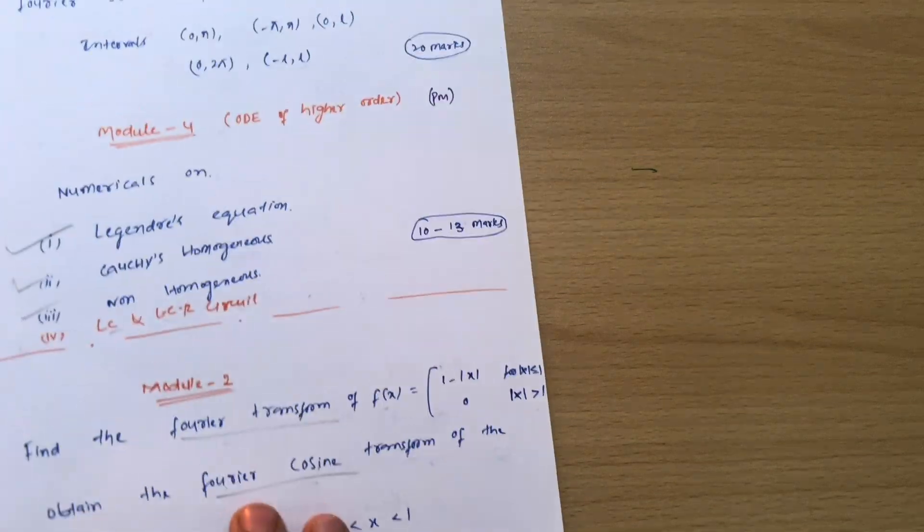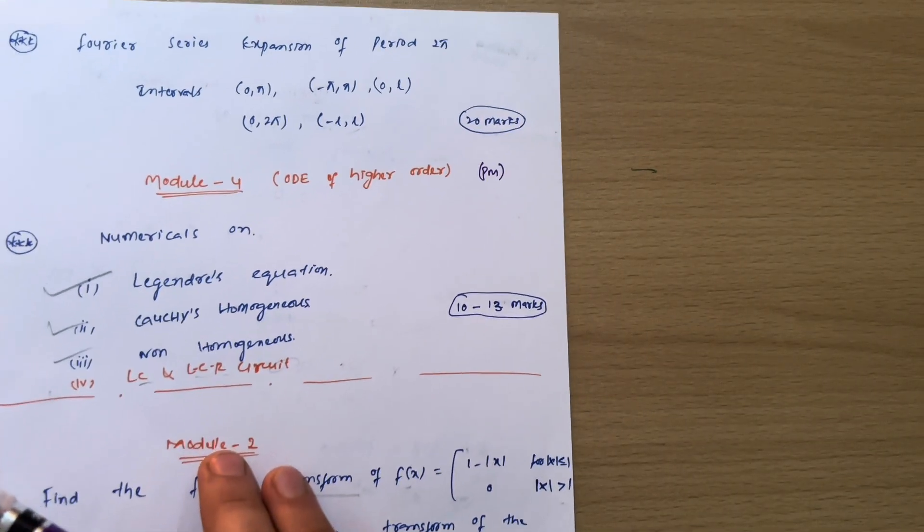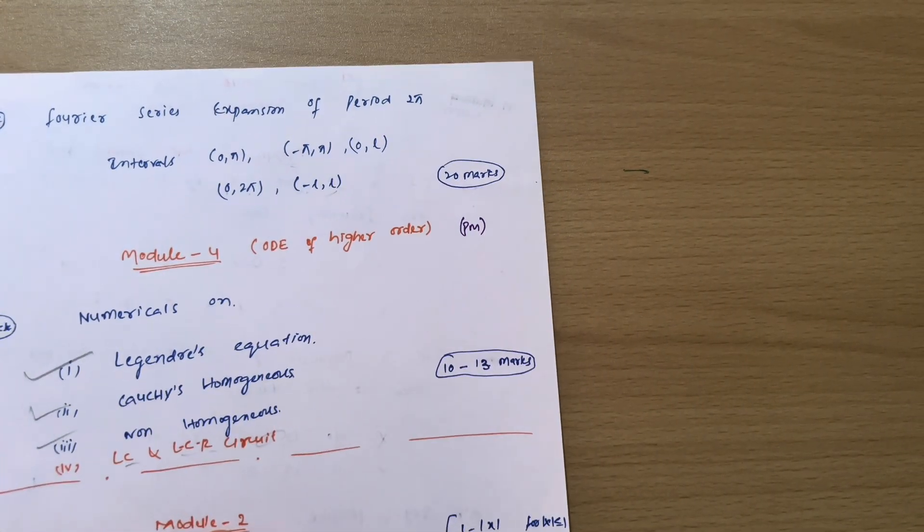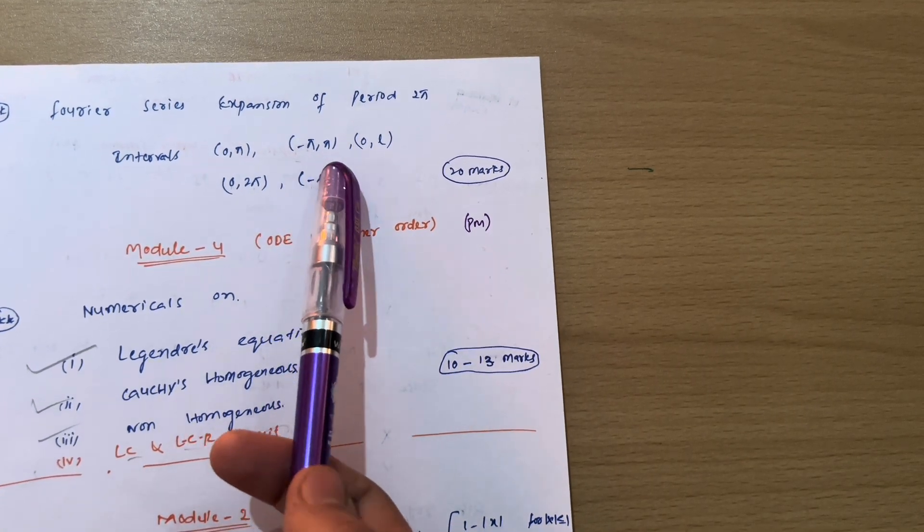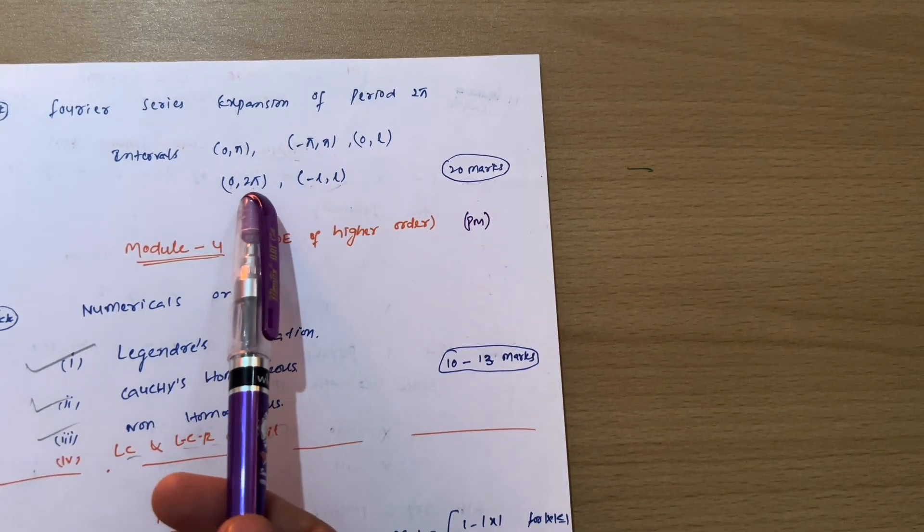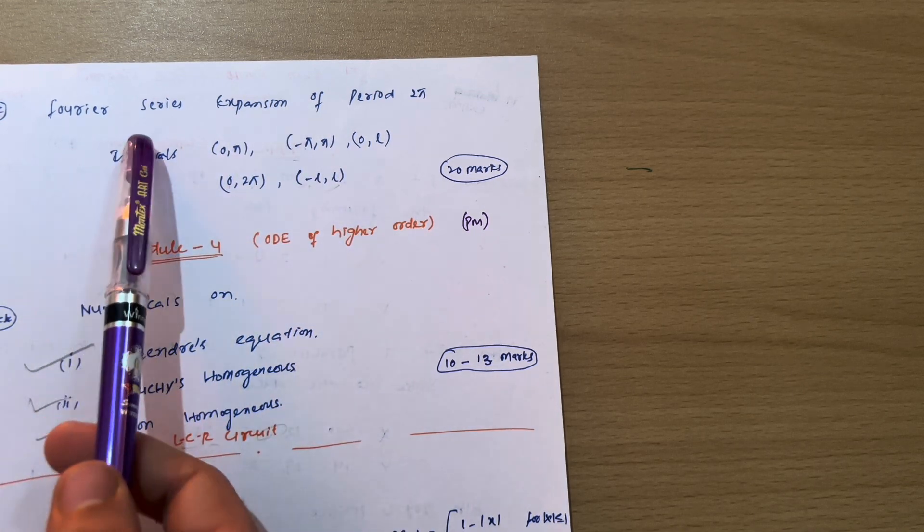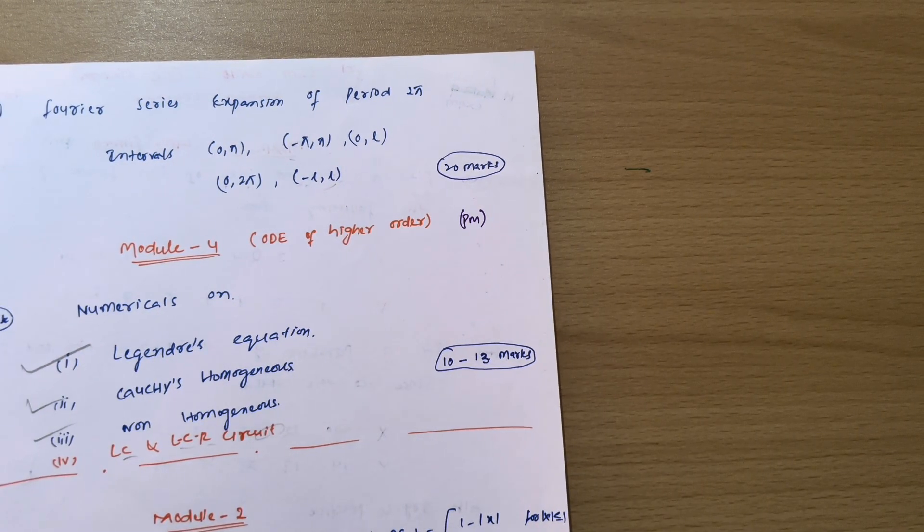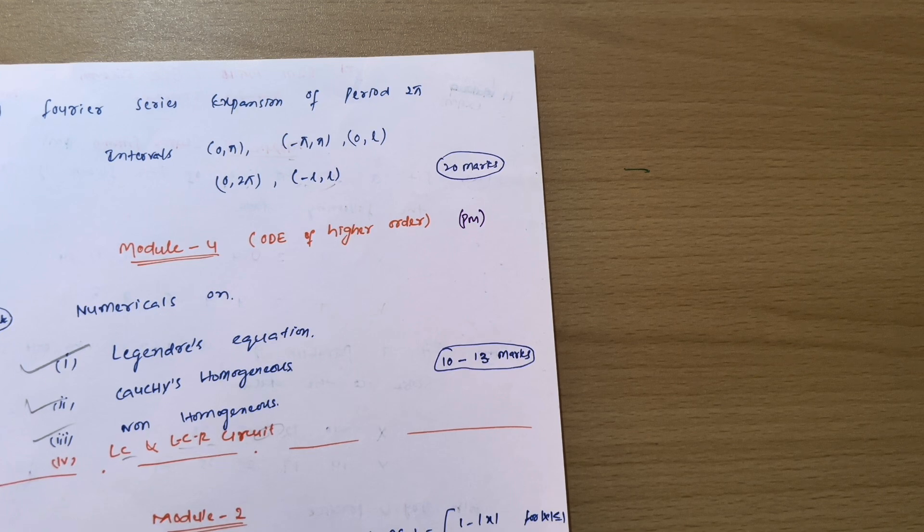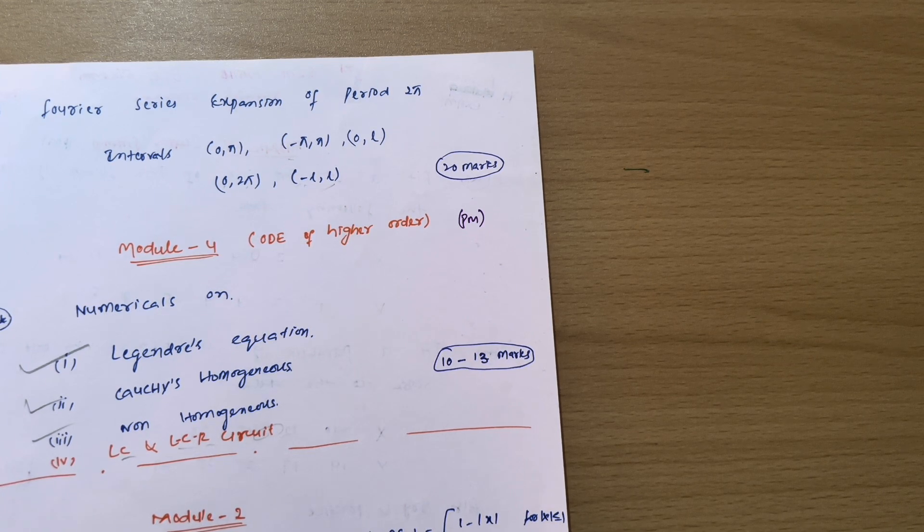Next we have Fourier series expansion of the period 2π. That is your intervals 0 to π and minus π to π, 0 to L, 0 comma 2π, minus L to L. So these intervals will be given. You have to expand the Fourier series. So from this module it is compulsory to get 20 marks.